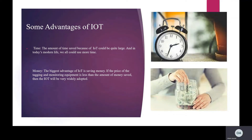Time: the amount of time saved because of IoT could be quite large, and in today's modern life, we all could use more time. Money: the biggest advantage of IoT is saving money. If the price of the tagging and monitoring equipment is less than the amount of money saved, then IoT will be very widely adopted.